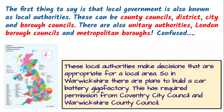Local government is also known as local authorities — the two terms are interchangeable — and that can be confusing because it covers quite a few institutions. For example, Warwickshire is a county council, but you can also get district councils, city and borough councils, unitary authorities, London borough councils, metropolitan boroughs, etc. Basically they all do the same thing: they make decisions at a local level that are appropriate for a local area.